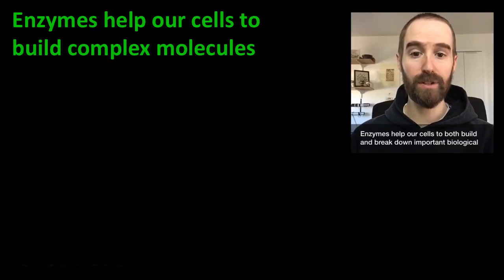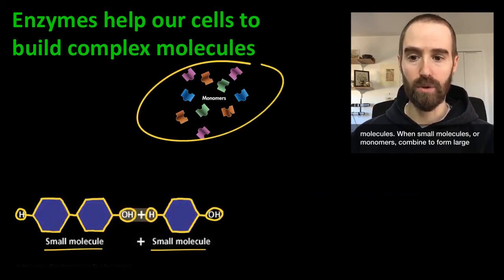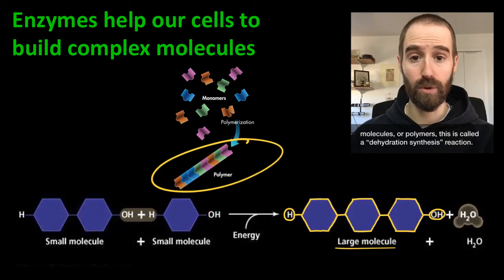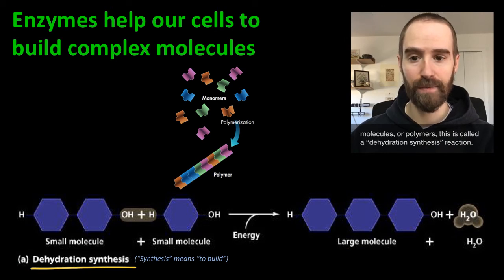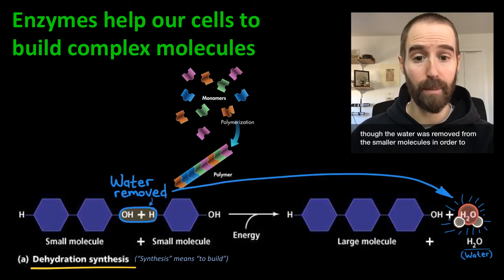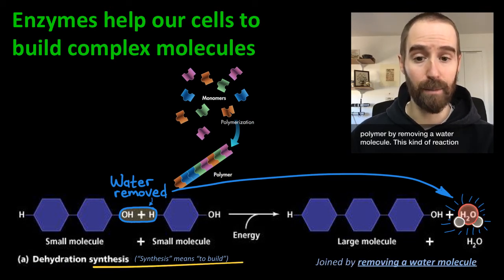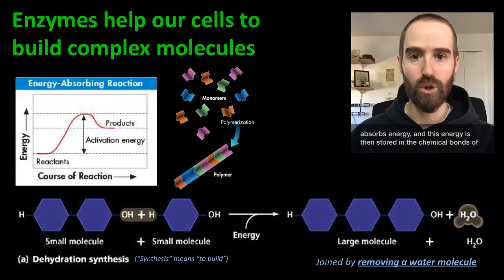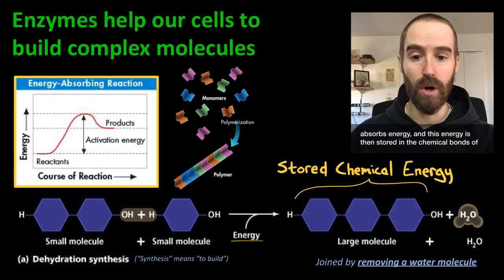Enzymes help our cells to both build and break down important biological molecules. When small molecules, or monomers, combine to form large molecules, or polymers, this is called a dehydration synthesis reaction. We call it dehydration because water is produced as a byproduct, as though water was removed from these smaller molecules in order to combine them. So the name basically means that we are synthesizing a polymer by removing a water molecule. This kind of reaction absorbs energy, and this energy is then stored in the chemical bonds of that large molecule that is produced.